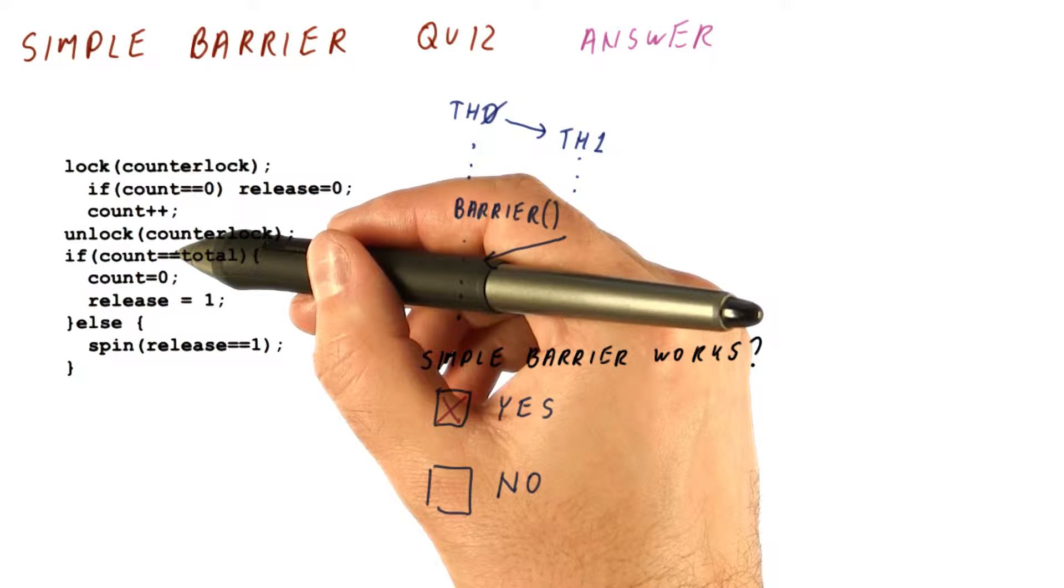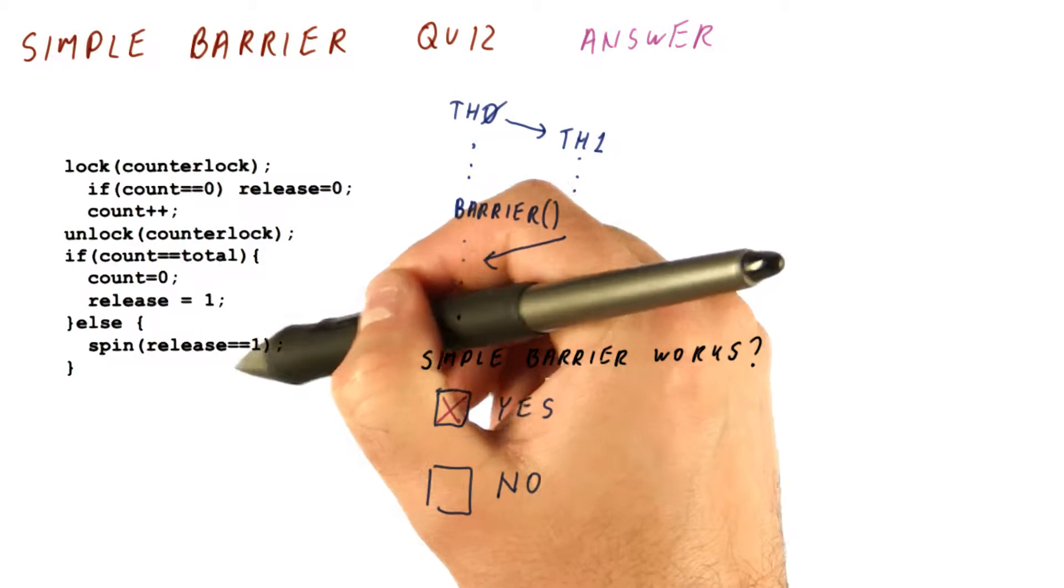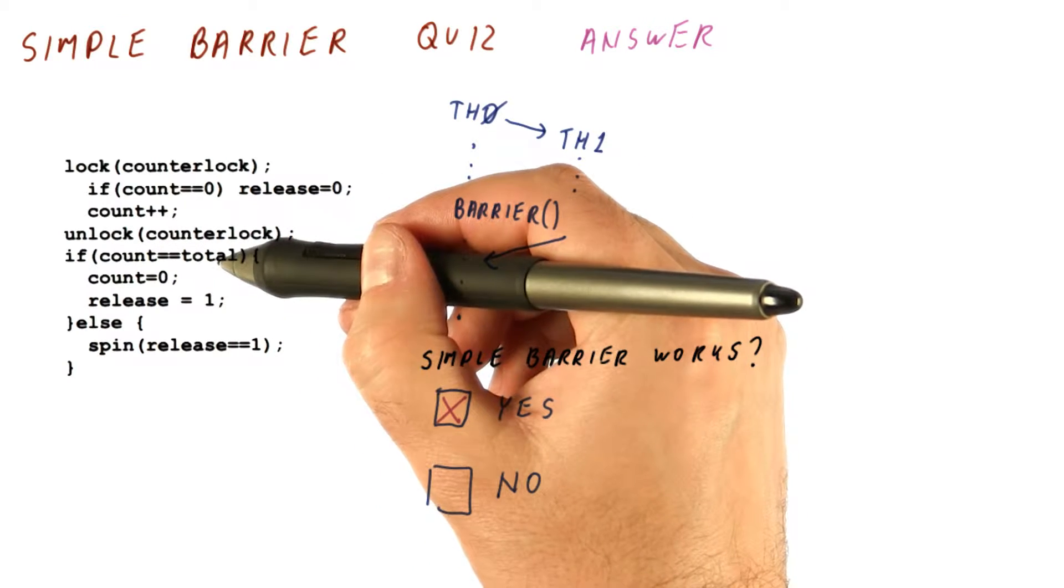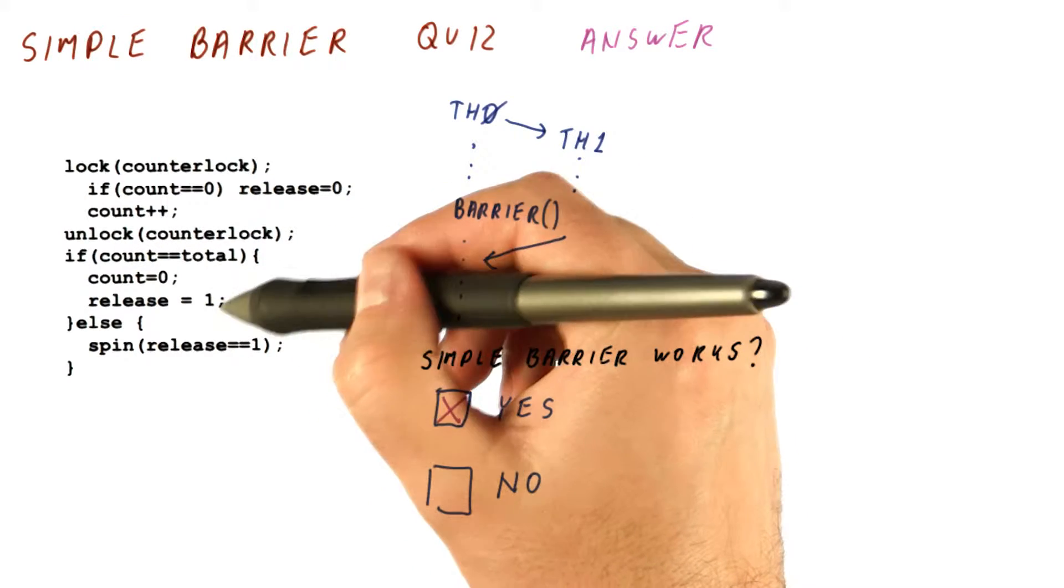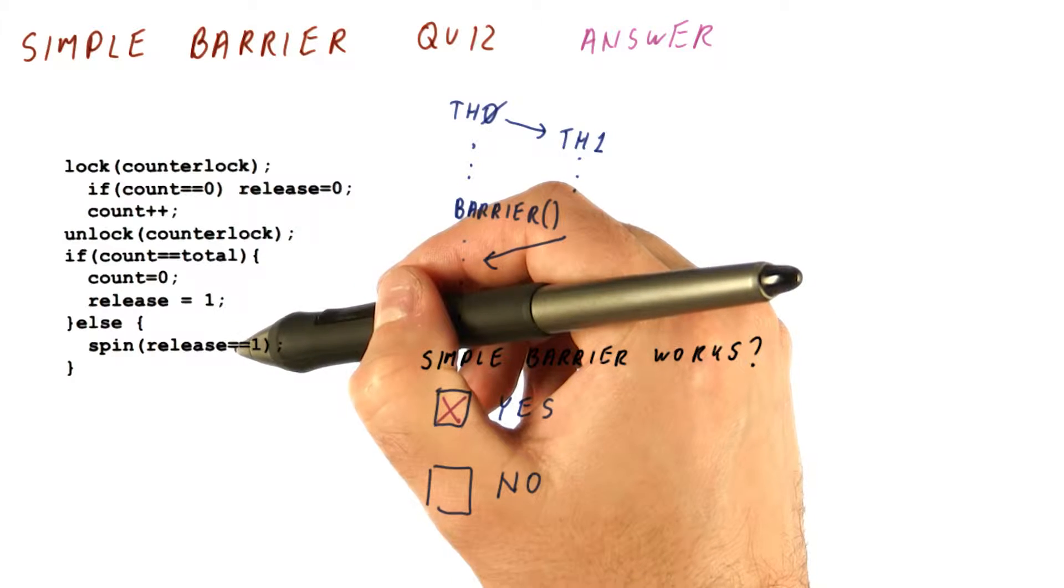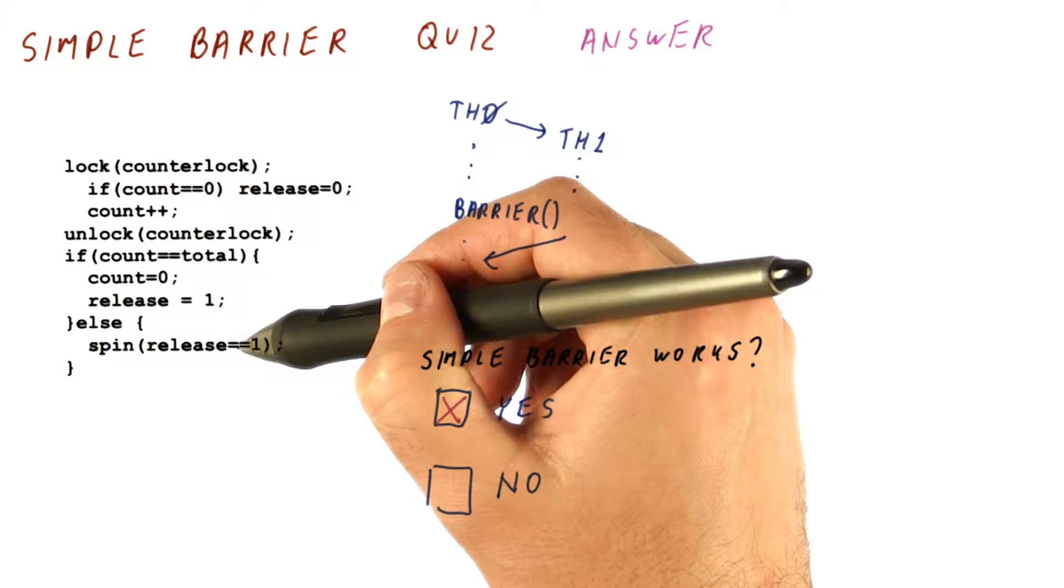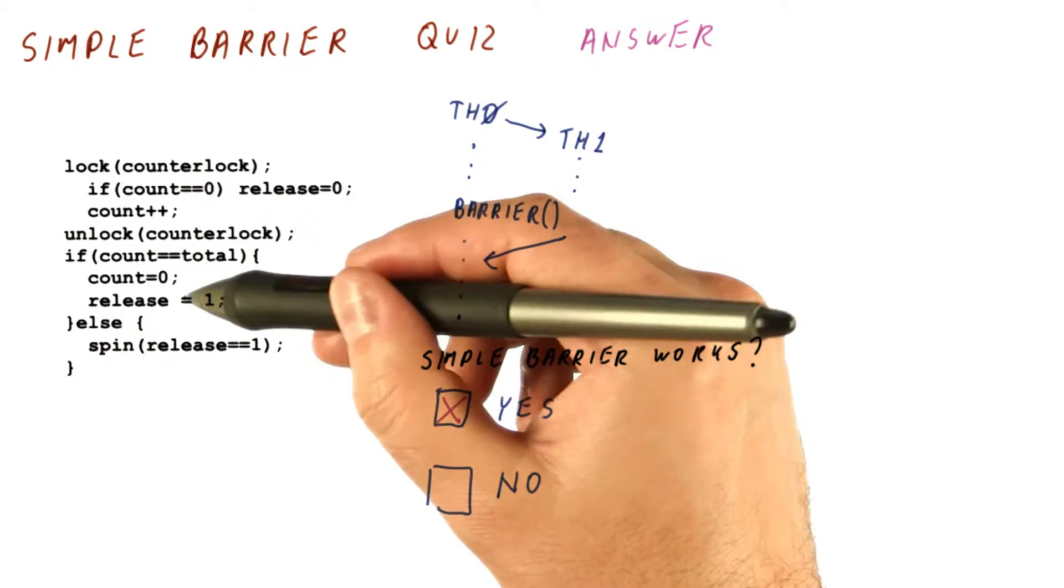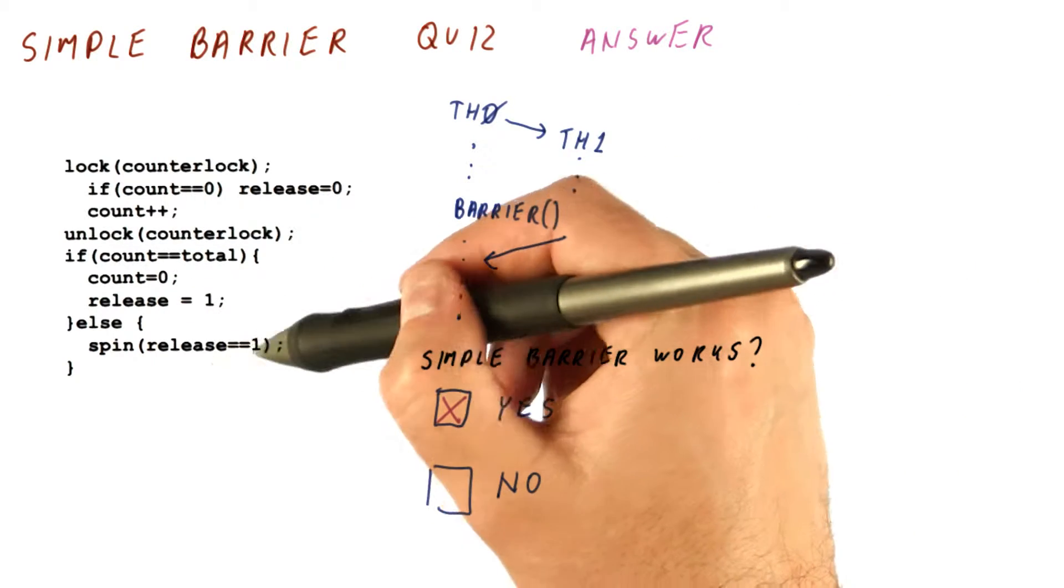If the first thread ends up waiting for release, the second one will still see that the count is two. Reset the count, set the release, and eventually due to coherence—remember that coherence guarantees that when we read the release, eventually we'll see it, it's just that we can be arbitrarily delayed.